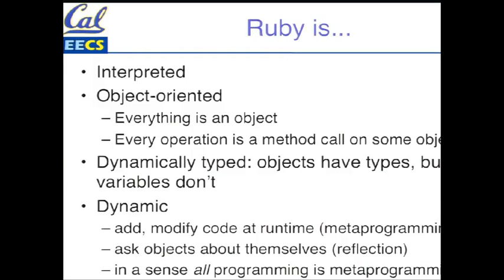And probably most importantly for our purposes, it's highly dynamic. There's a lot of things you can do at runtime that in other languages you could only do at compile time. In fact, it's not too much of an exaggeration to say that in Ruby, there's no other time but runtime. Even things that look like class declarations are not really declarations — they're code that gets executed to create new things at runtime. The fact that Ruby has this feature means that it's become pervasively used to make your code more concise and more elegant, and we'll do some hopefully informative examples of this today.